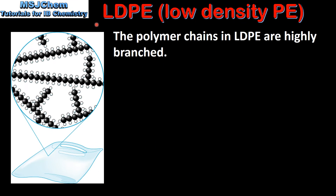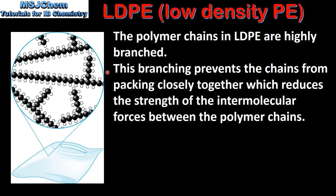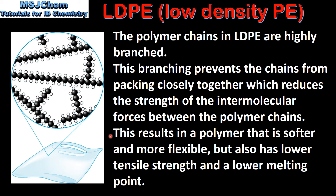Next we look at LDPE, which is low density polyethene. The polymer chains in LDPE are highly branched, as you can see in this diagram. This branching prevents the chains from packing closely together, which reduces the strength of the intermolecular forces between the polymer chains. This results in a polymer that is softer and more flexible, but also has lower tensile strength and a lower melting point.